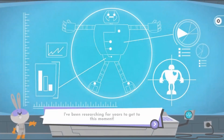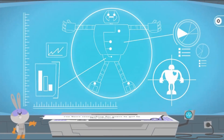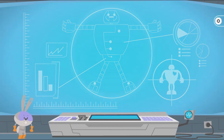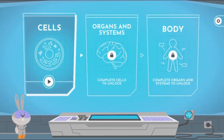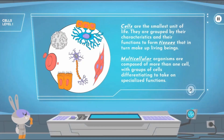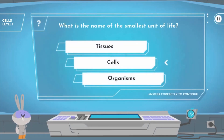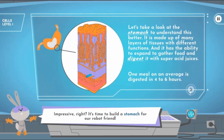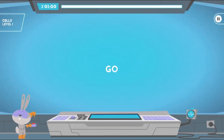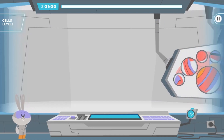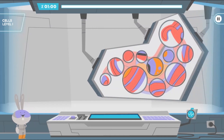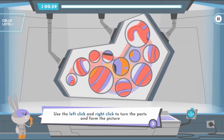Legends of Learning presents The Spark of Life Game. This is a science game that makes learning about multicellular organisms and their subsystems fun and easy to understand. In this informative, instructional game, help this scientific rabbit to build his new robot friend while you discover fascinating things about multicellular systems.